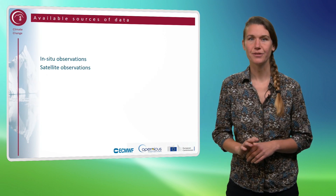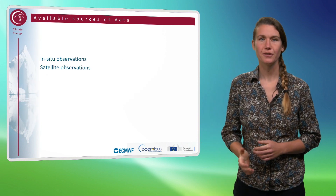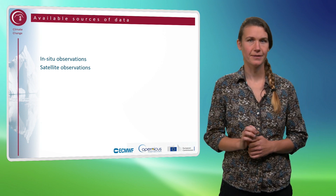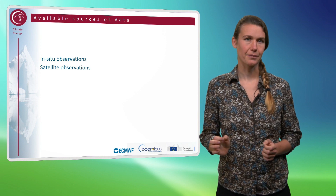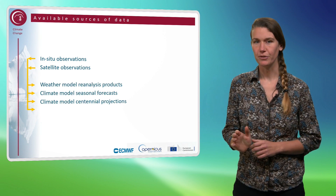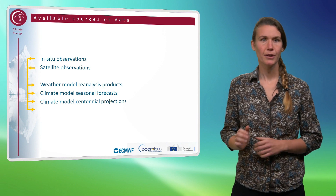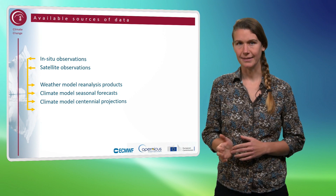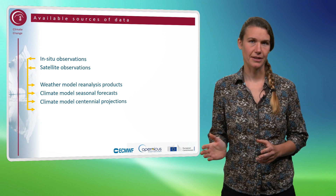Data that is or will be available through the Climate Data Store includes, first of all, observational data, which can be either in situ measurements — for example from weather stations — or data derived from satellite products. Observational data is used as input for different kinds of data generated with models, such as reanalysis, seasonal forecasts and long-term projections.